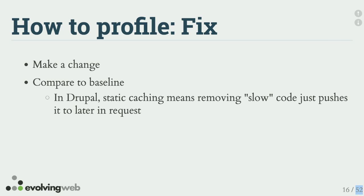The next step in MAFIA is F for Fix. Make a change and see if it helps. It's very important to do a comparison, especially in Drupal, which is very complex. You don't know the whole code base. You might optimize something and think you saved 100 milliseconds, but really you just moved it from one place to another — because during page rendering, the result of that query was statically cached and now it's not, so it'll just run that query again.